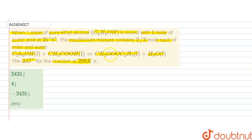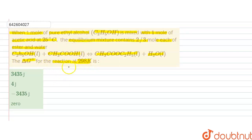So in this question it is given that one mole of pure ethyl alcohol is reacted with acetic acid to form ester and water, and at equilibrium 2/3 mole of ester and water are formed. We have to find out the ΔG°, that is standard free energy change, for the reaction at 298 K.